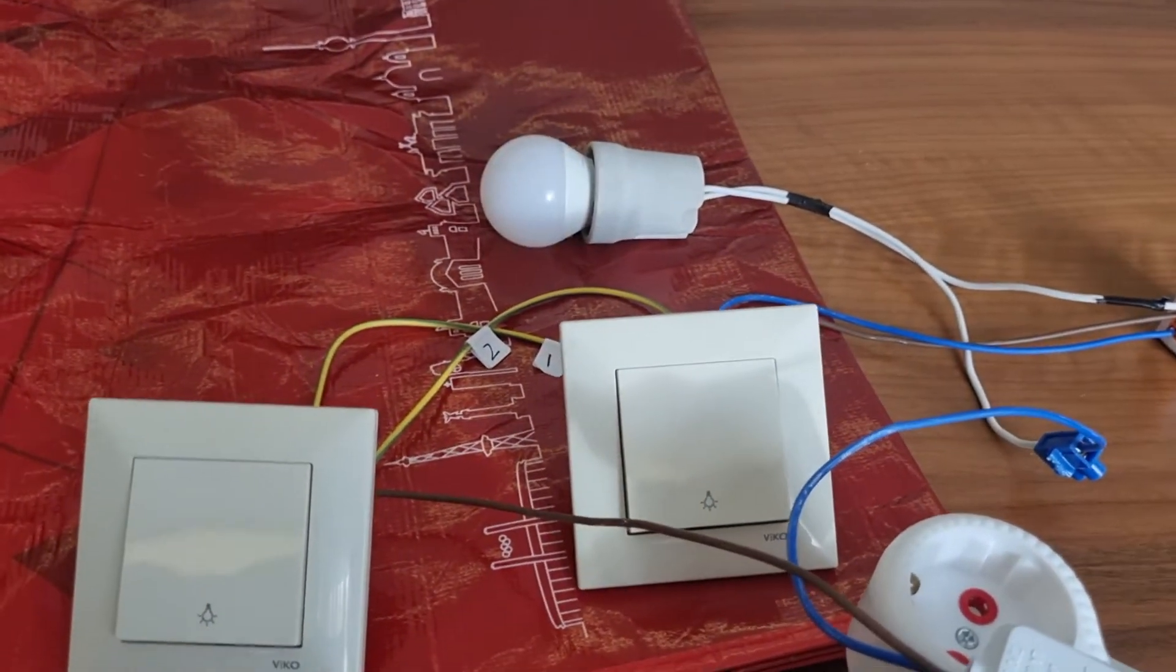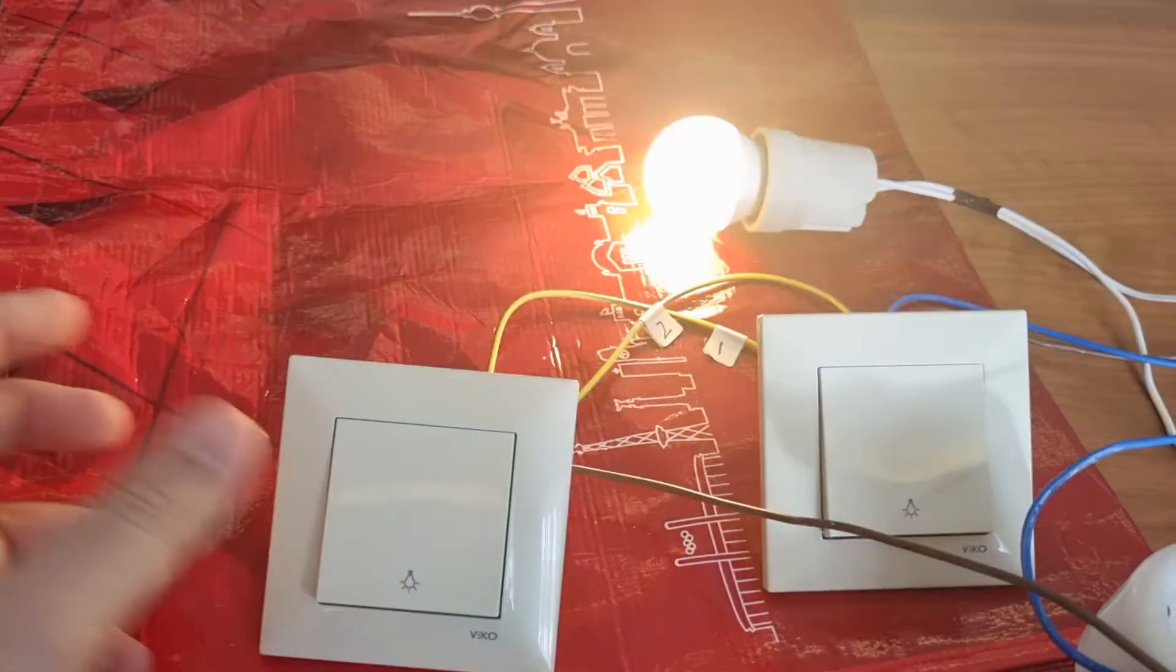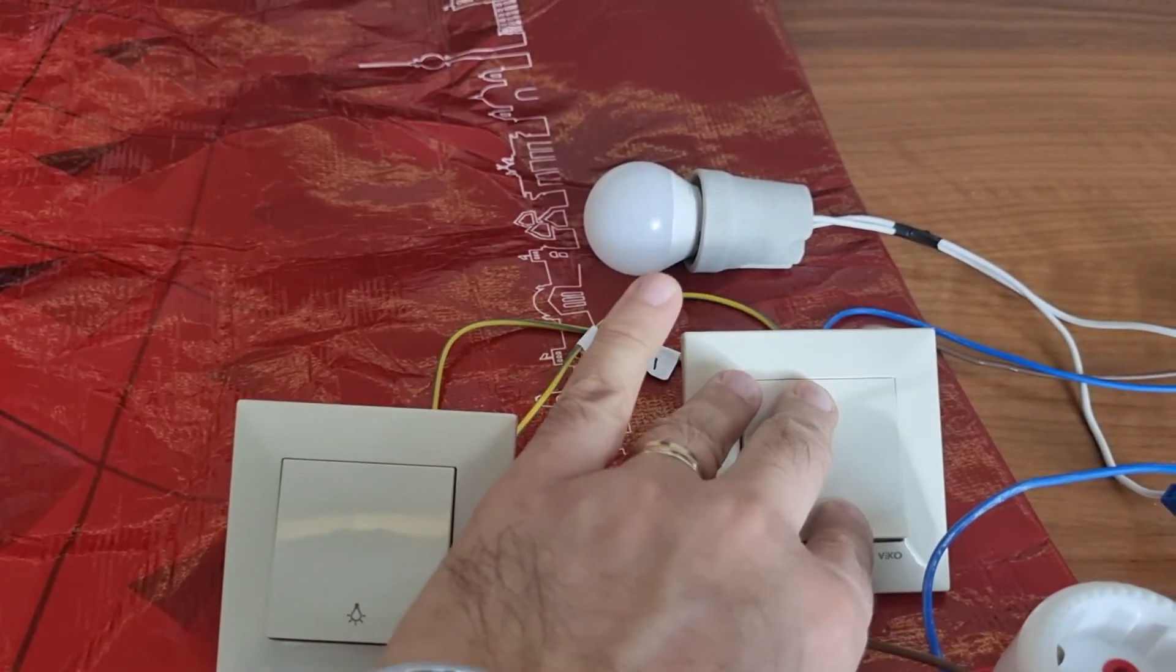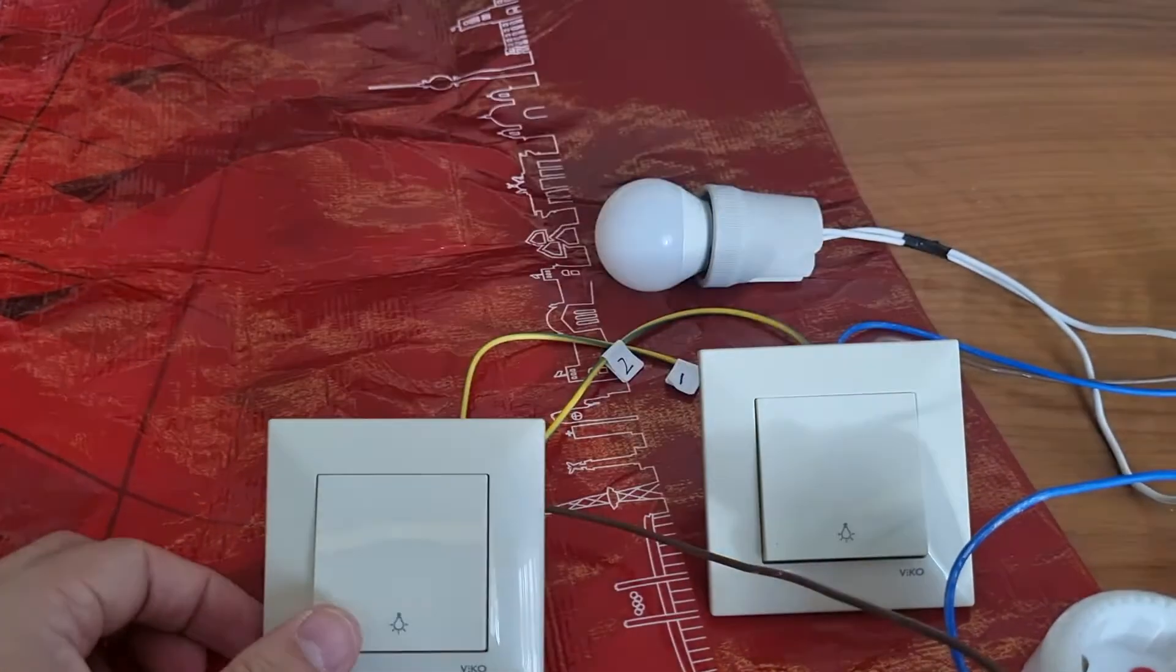Now I'll connect them both and turn on the power. Right now the system is working. If I press it, you see the light turns on. Press it again, light turns off. Press this one—turned on, turned off.